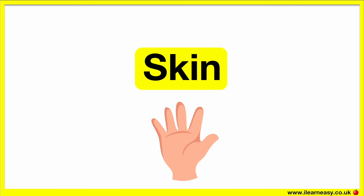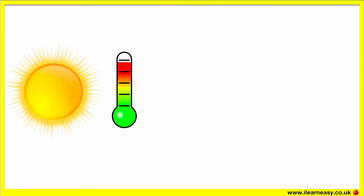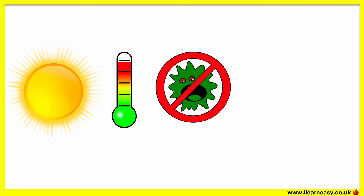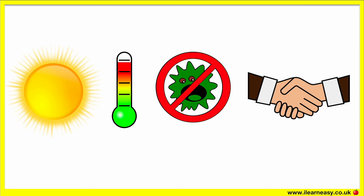Our skin helps us with our sense of touch. The skin is the largest organ in the human body. The skin has many useful purposes: it absorbs sunlight for vitamin D, it controls our internal temperature, it protects us from the outside environment such as harmful germs, and the skin allows for the sensation of touch.